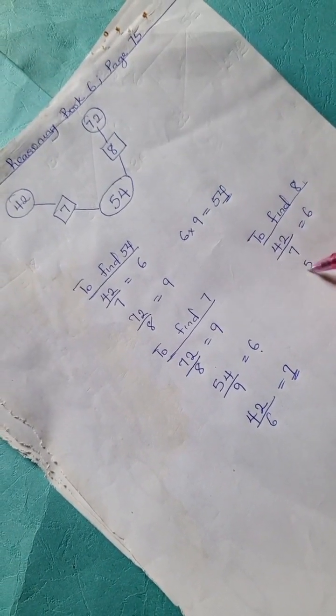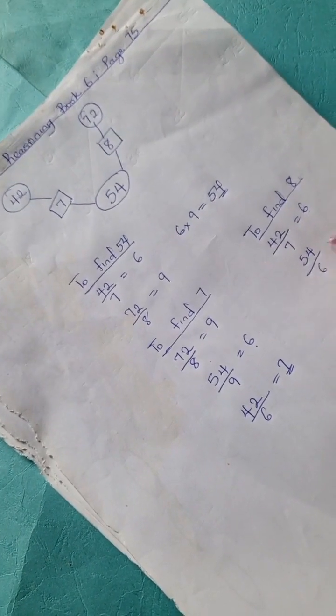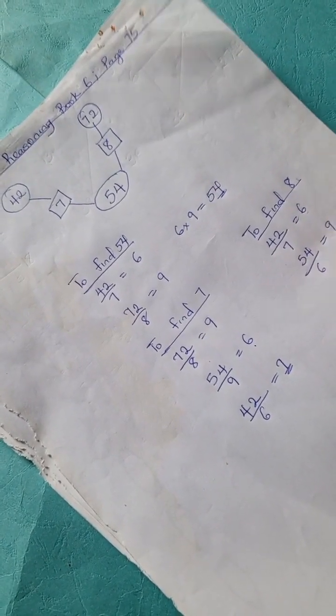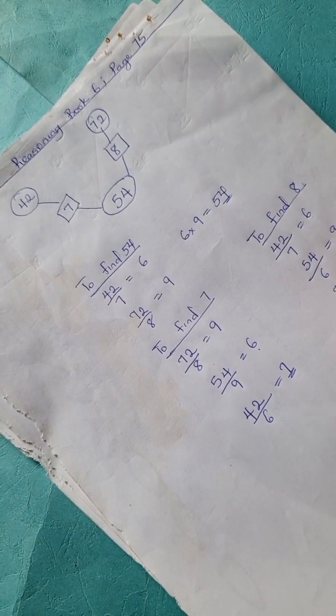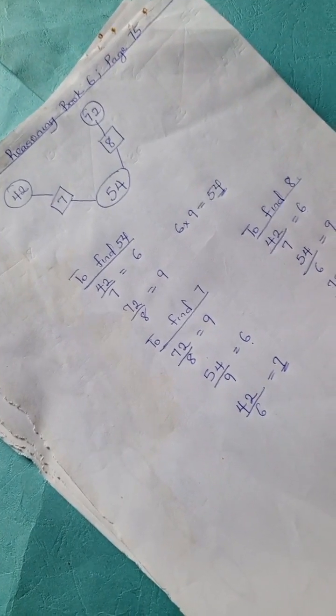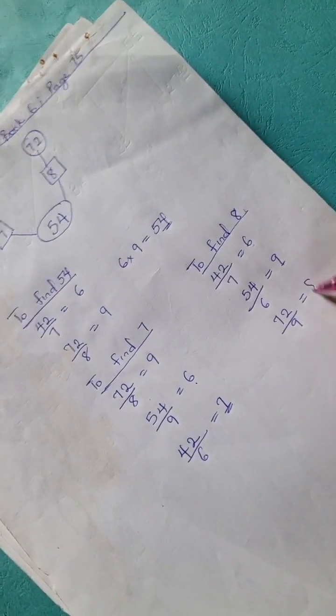And 54 divided by 6 is 9. Hence, 72 divided by 9 is 8.